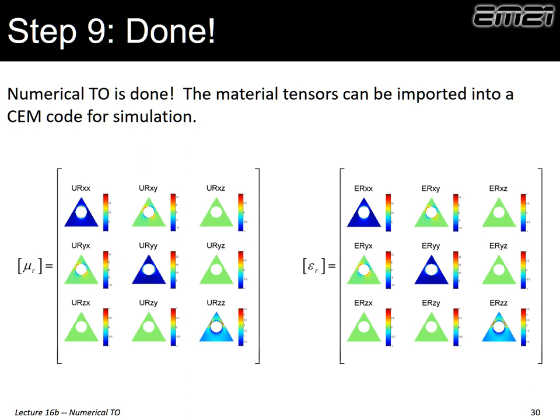If we do this for all points, we end up with our final answer for both the permeability and permittivity. The white regions are ones or zeros for the off-diagonals — I'm only showing the permeability and permittivity where the cloak region is. If we were to pass a wave through this magical material, the wave would appear to bend around the object and render that object invisible. That is the full numerical implementation of transformation optics.